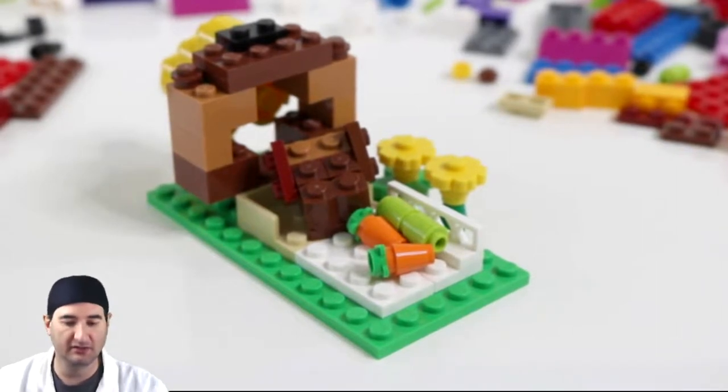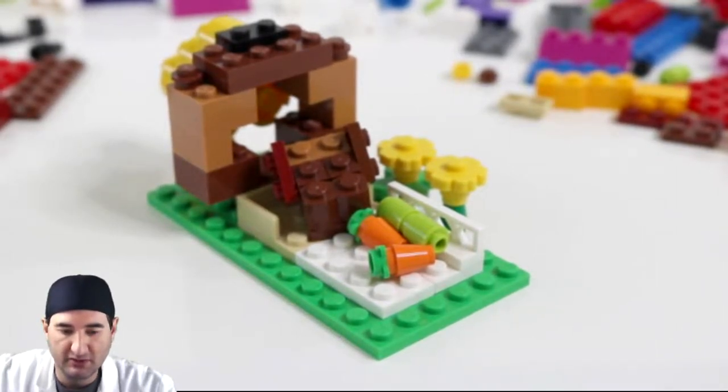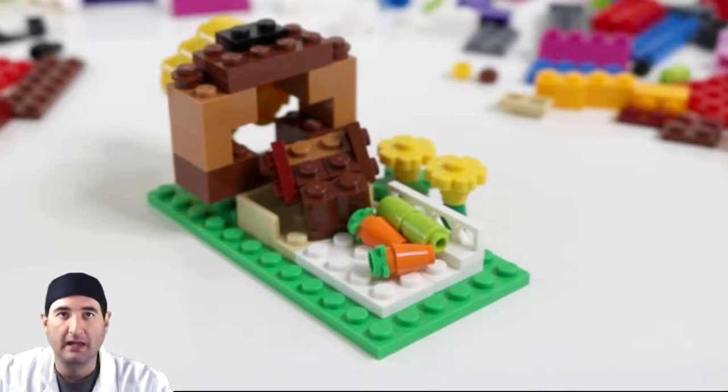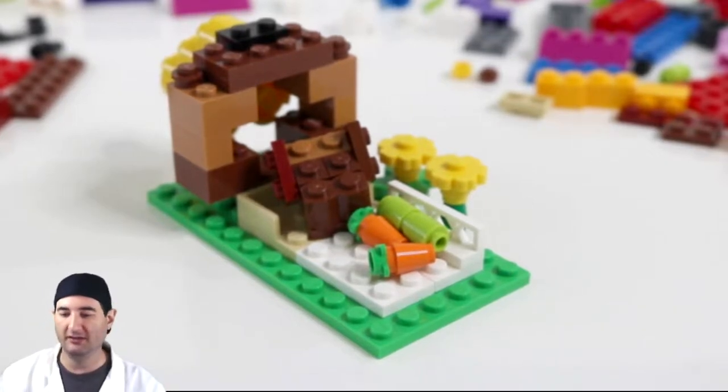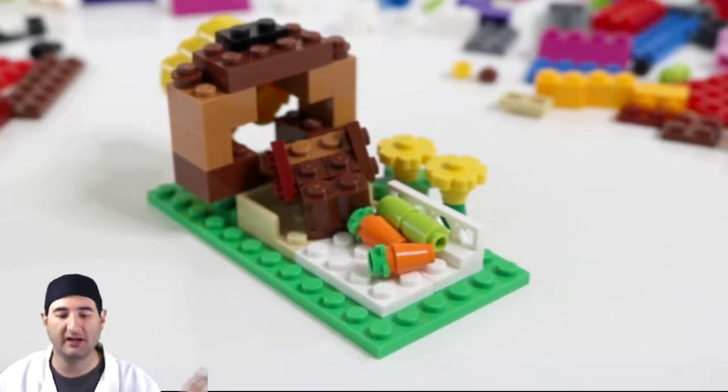You know, turkey, turducken, whatever. Whatever you want to call it. Then we have the carrots out front and the celery. So there you go. That's a cornucopia. Let's talk about how I built it.